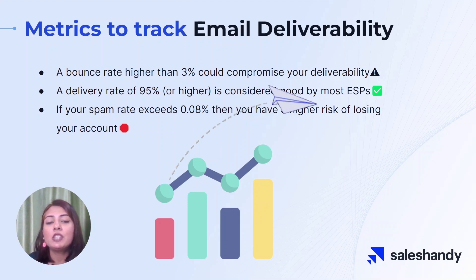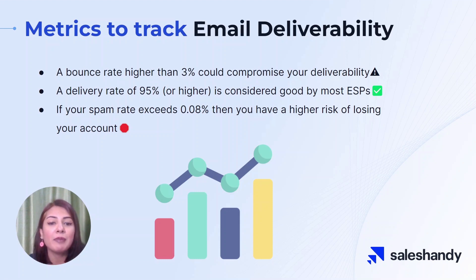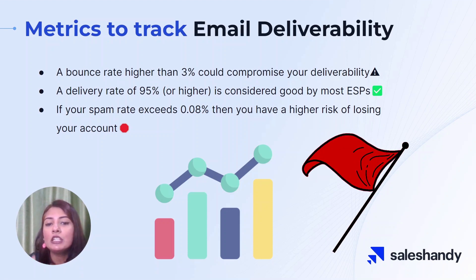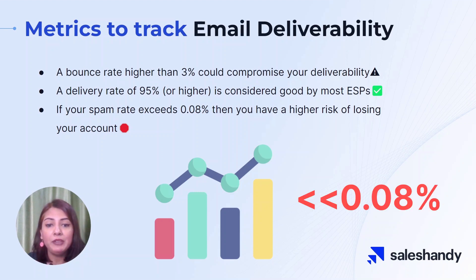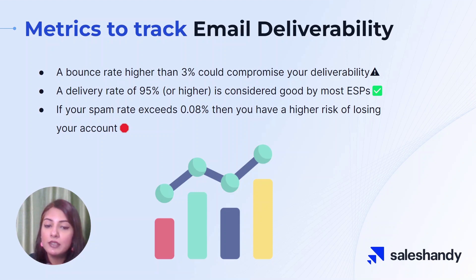Next, let's talk about delivery rate. This is the percentage of emails that are successfully delivered to the recipient's inbox. A delivery rate of 95% or higher is considered good by most ESPs. If your delivery rate is lower than this, it could be an indication that your emails are being flagged as spam or that there are other issues with your sender's reputation. Finally, let's talk about spam rate. This is the percentage of emails that are marked as spam by the recipient. If your spam rate exceeds 0.08%, you should take immediate action to address the issue and improve your sender's reputation. Overall, tracking these metrics is crucial for maintaining good email deliverability.